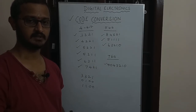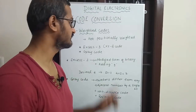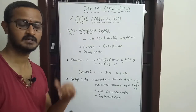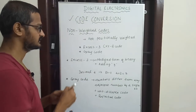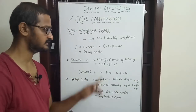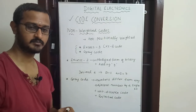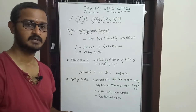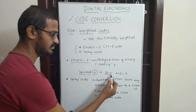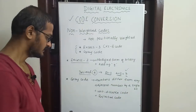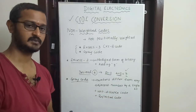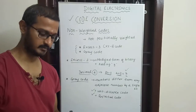Next are non-weighted codes. Non-weighted codes are not positionally weighted — they have no positional weights. The two types are XS3 (Excess-3) and Gray code. XS3 is a modified form of binary numbers: you add 3 to each decimal digit and then convert to binary to get the XS3 code.